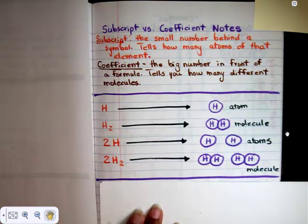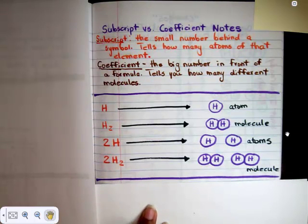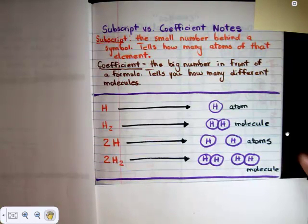The first one we're going to draw: if we have an H, we just see one atom of hydrogen. H2 is two atoms of hydrogen together as one molecule.